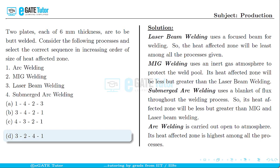Therefore, the processes in increasing order of the size of heat affected zones among these four processes are: laser beam welding, followed by MIG welding, followed by submerged arc welding, followed by arc welding.